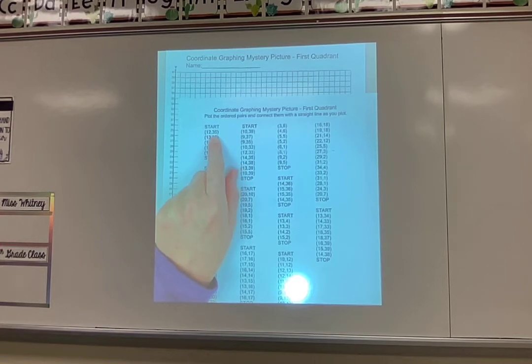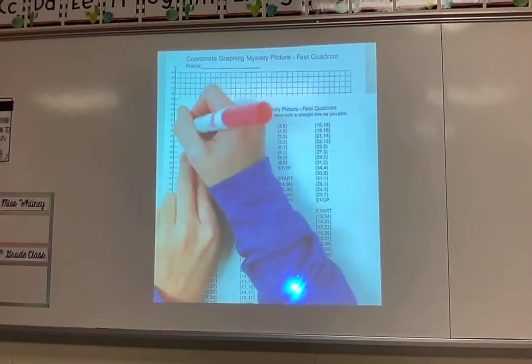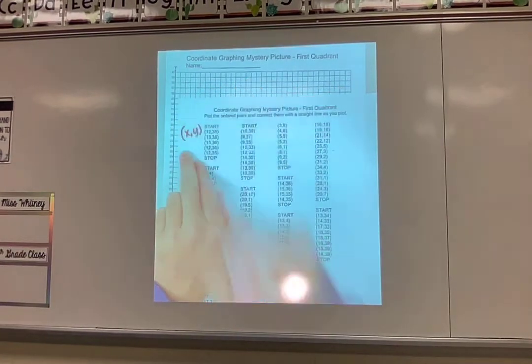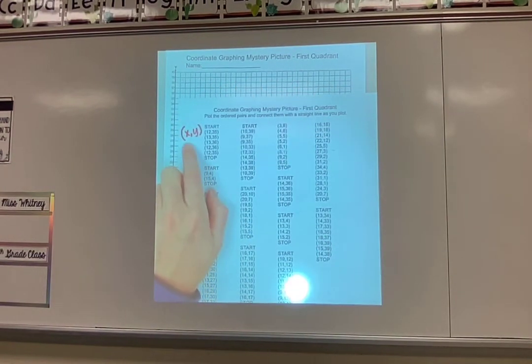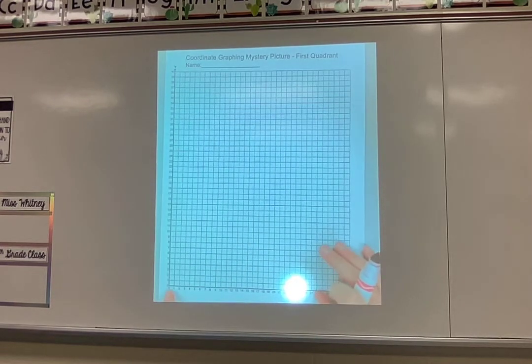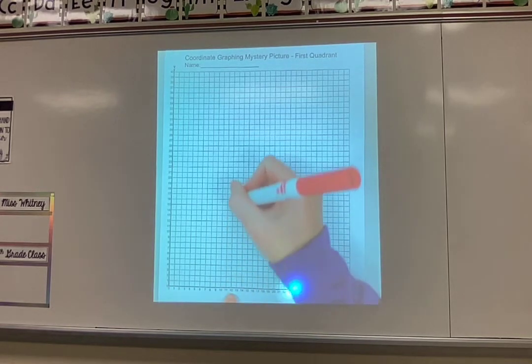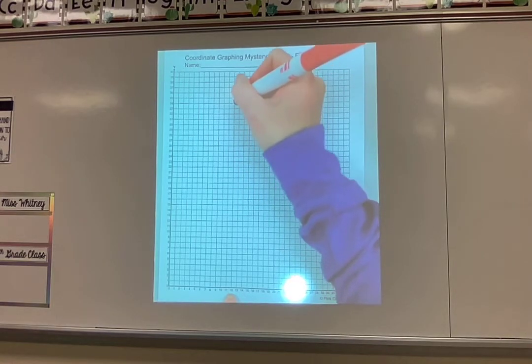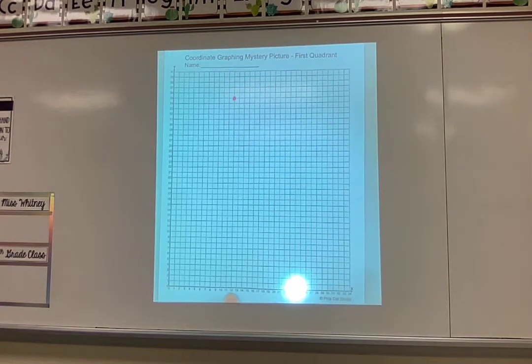Remember these ordered pairs always go X Y. Every time they go X Y. So when I see 12, 35 I'm going to go over to my page and I know I need to go along the X first. So across to 12 and then up to 35 and I have to be super careful because if I graph this on the wrong spot it is going to make my picture messed up. There's 12, 35.